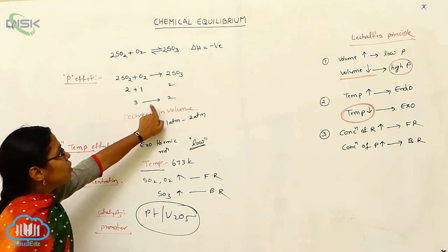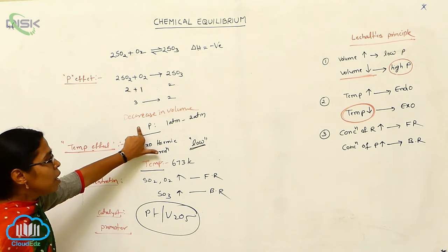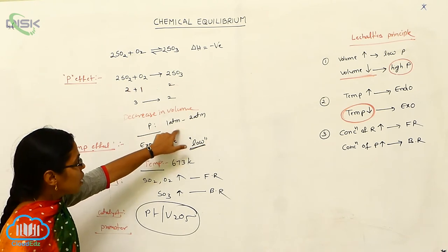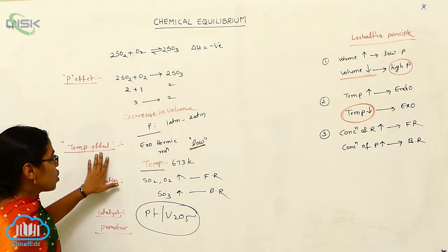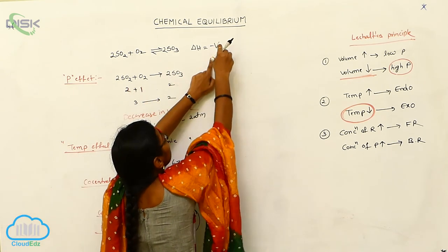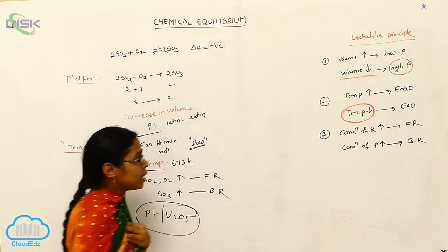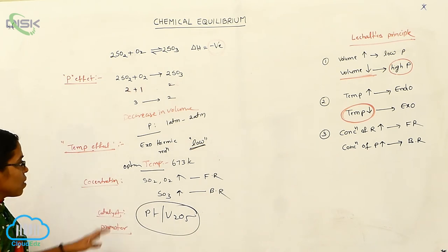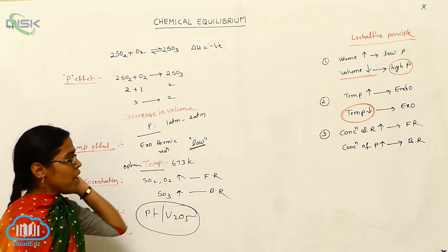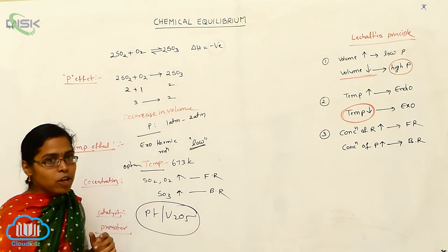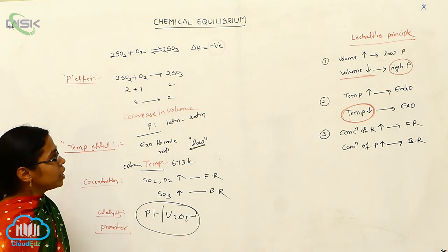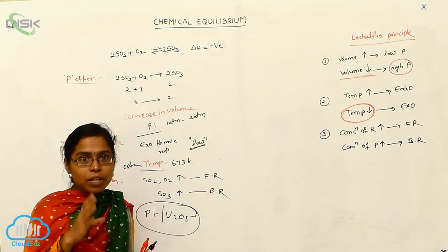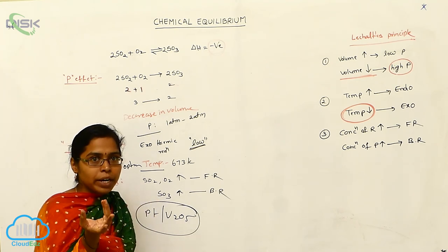For the pressure effect, the decrease in volume takes place, so high pressure is favorable. But at high pressure, the instruments may undergo corrosion, so we use the optimum pressure of 1 to 2 atmospheres. The optimum temperature is 673 Kelvin. The catalyst is platinum or vanadium pentoxide. This is the second application of Le Chatelier's principle. We have completed 50% of the chemical equilibrium topic and will now move into acids and bases.